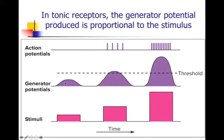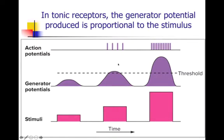Here we have our generator potentials — we're talking about sensory. A stimulus such as light that is not enough to reach threshold produces no action potential. A larger stimulus, more light, and you start to see action potentials occur because you've sustained that stimulus at or above the threshold. With an even larger stimulus, bright light, you get lots of action potentials one after another — more frequent. And last time we introduced the idea of tonic versus phasic receptors.